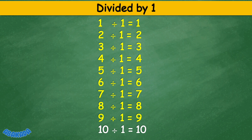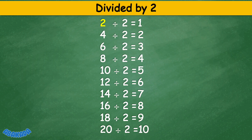10 divided by 1 equals 10. Divided by 2: 2 divided by 2 equals 1, 4 divided by 2 equals 2, 6 divided by 2 equals 3, 8 divided by 2 equals 4, 10 divided by 2 equals 5, 12 divided by 2 equals 6, 14 divided by 2 equals 7, 16 divided by 2 equals 8.